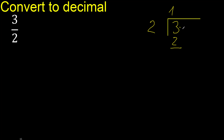3 minus 2 is 1. There is no number that goes down, therefore complete — always complete with 0. Here: point. Point only once.